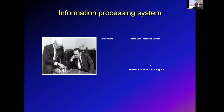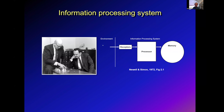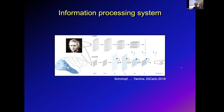Traditionally, information processing systems were defined in a computer metaphor, where there's sensory input from the environment which is processed in some kind of storage or working memory — a temporary buffer — where knowledge can be manipulated to make inferences and decisions, and then produce some kind of plan of action, which is then executed through the effectors. Newell and Simon described this with symbolic processes. But that's also the underlying concept in more modern neural network approaches, where processing takes place through matrix multiplication of vectorial representations.